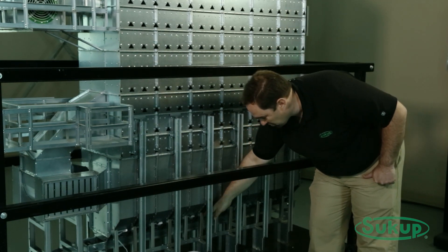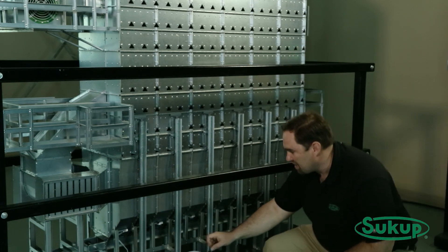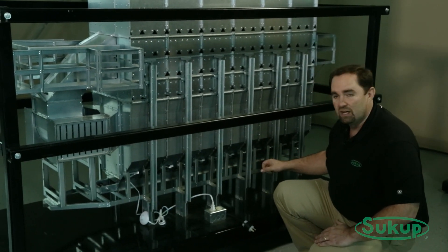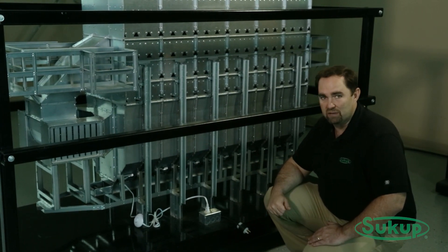Those screens then taper down towards the center, or they turn towards the center of the dryer for one takeaway system. In the bottom we either have a drag conveyor, chain and paddle drag conveyor, or we can do an auger system unload in the bottom as well.